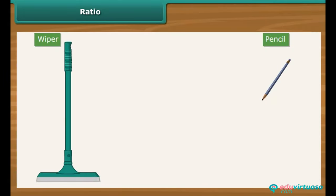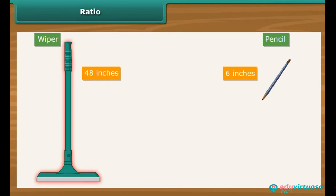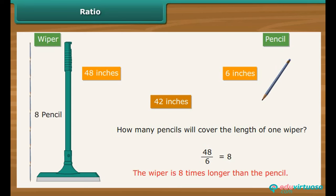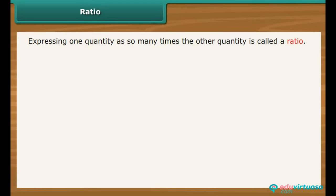For example, suppose we compare a 6-inch long pencil with a 48-inch long wiper. The wiper is 42 inches longer than the pencil. However, the difference does not bring out clearly the extent of variation in the lengths. How many pencils will cover the length of one wiper? The answer is 48 divided by 6, that is 8. In other words, the wiper is 8 times longer than the pencil. Expressing one quantity as so many times the other quantity is called a ratio.